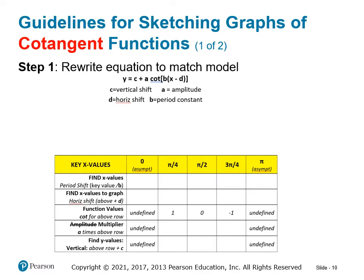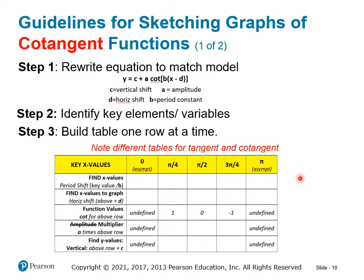Here's the table for cotangent. Instead of going from negative pi over 2 to pi over 2, we go from 0 to pi. The values are undefined, 1, 0, negative 1, which shows it's a decreasing function, whereas tangent is increasing. You need to understand the key x values, key angle values, and the function values for those.